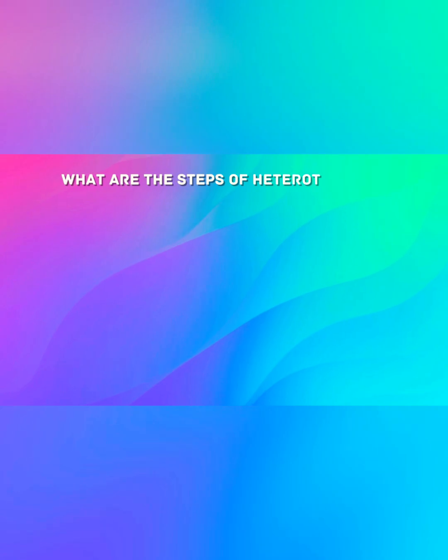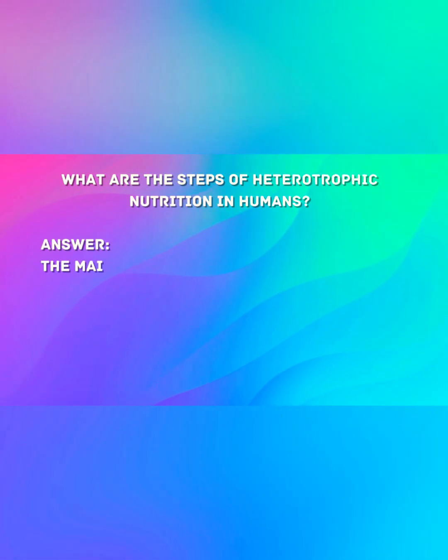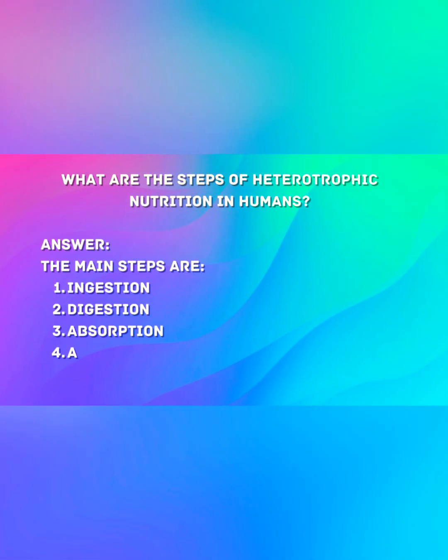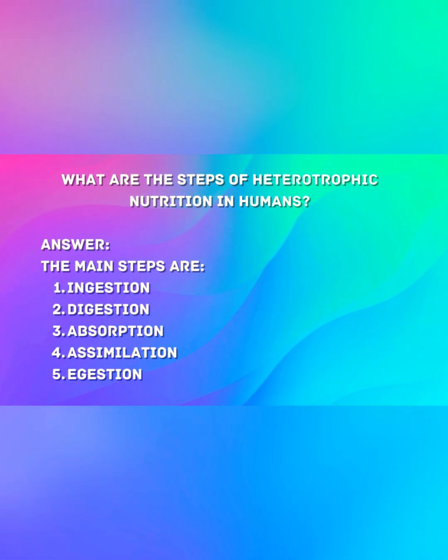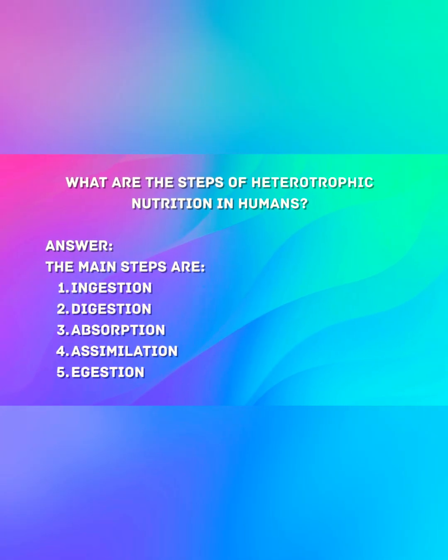What are the steps of heterotrophic nutrition in humans? The main steps are ingestion, digestion, absorption, assimilation, and egestion.